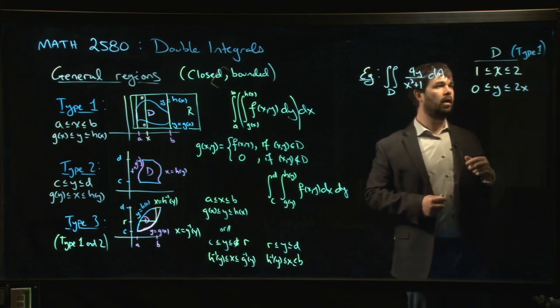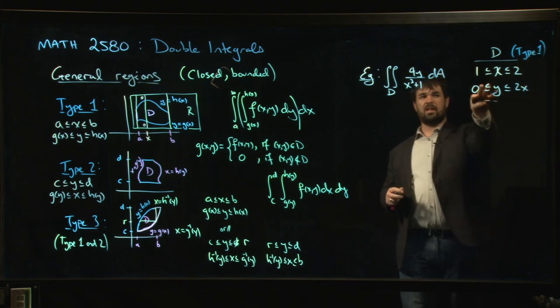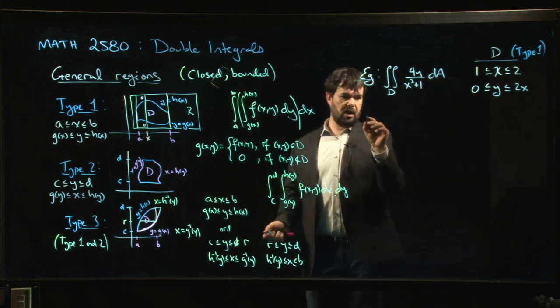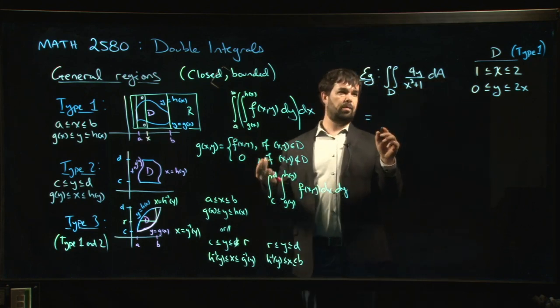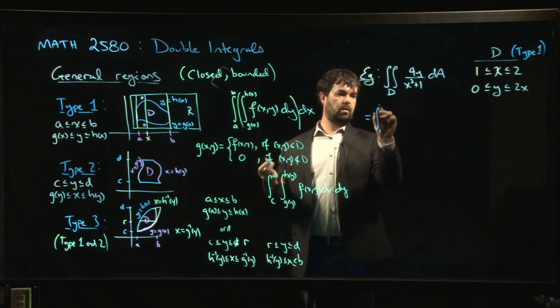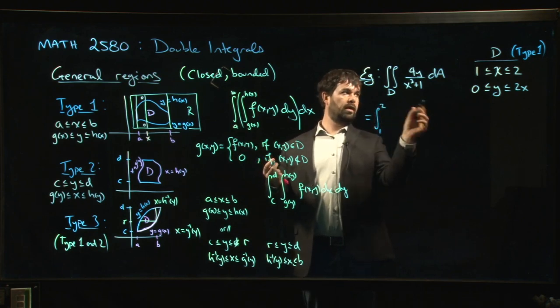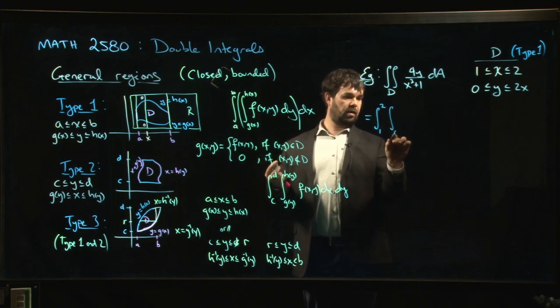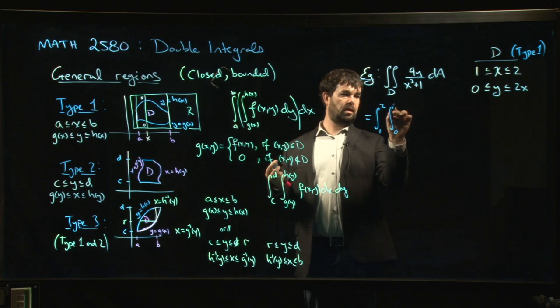Just looking at the inequalities that describe the region, we know it should be Type 1. That means if we follow this recipe, we can write down the integral: x goes from 1 to 2. The numbers have to be on the outside; the ones that depend on one of the variables have to be on the inside.